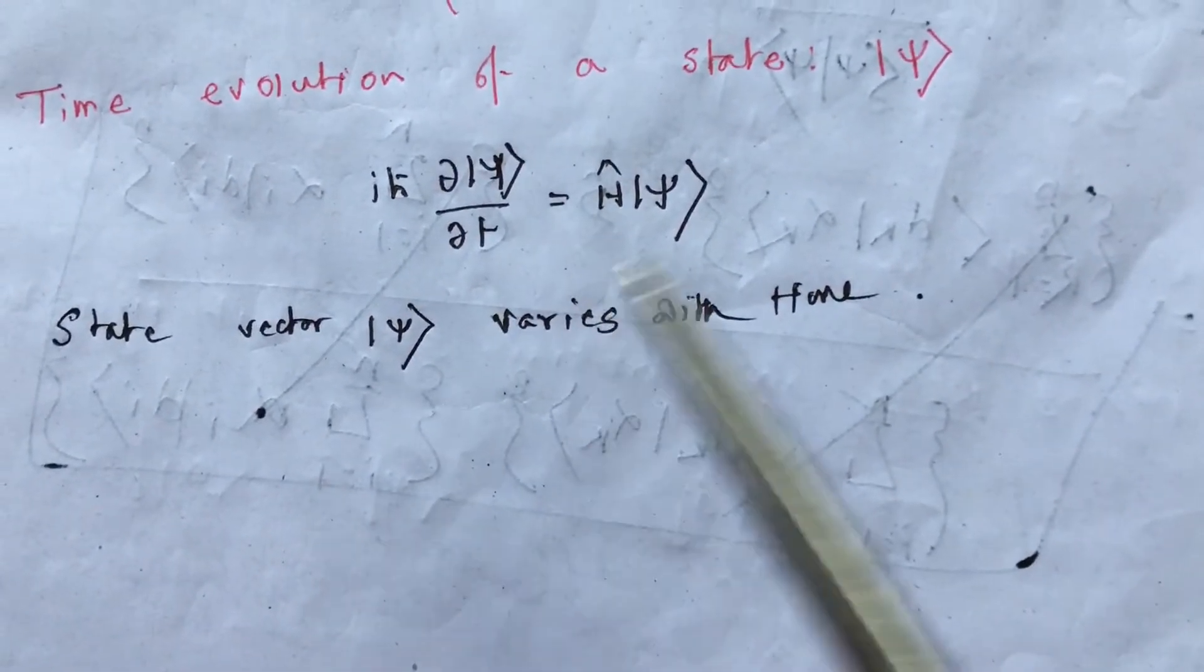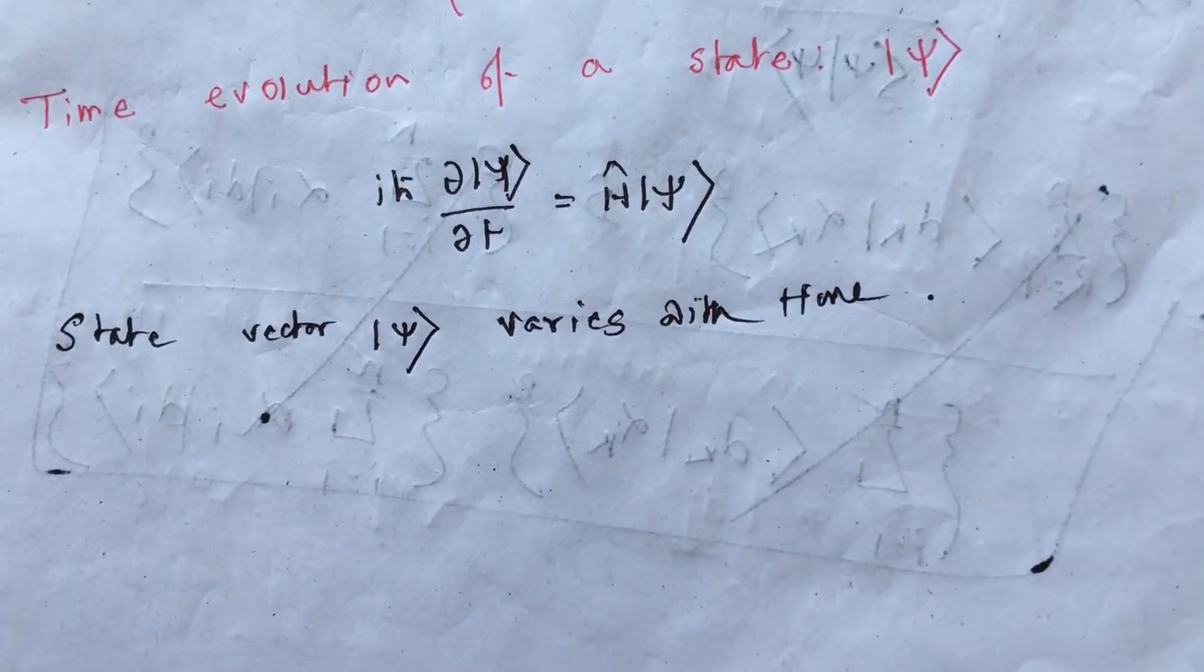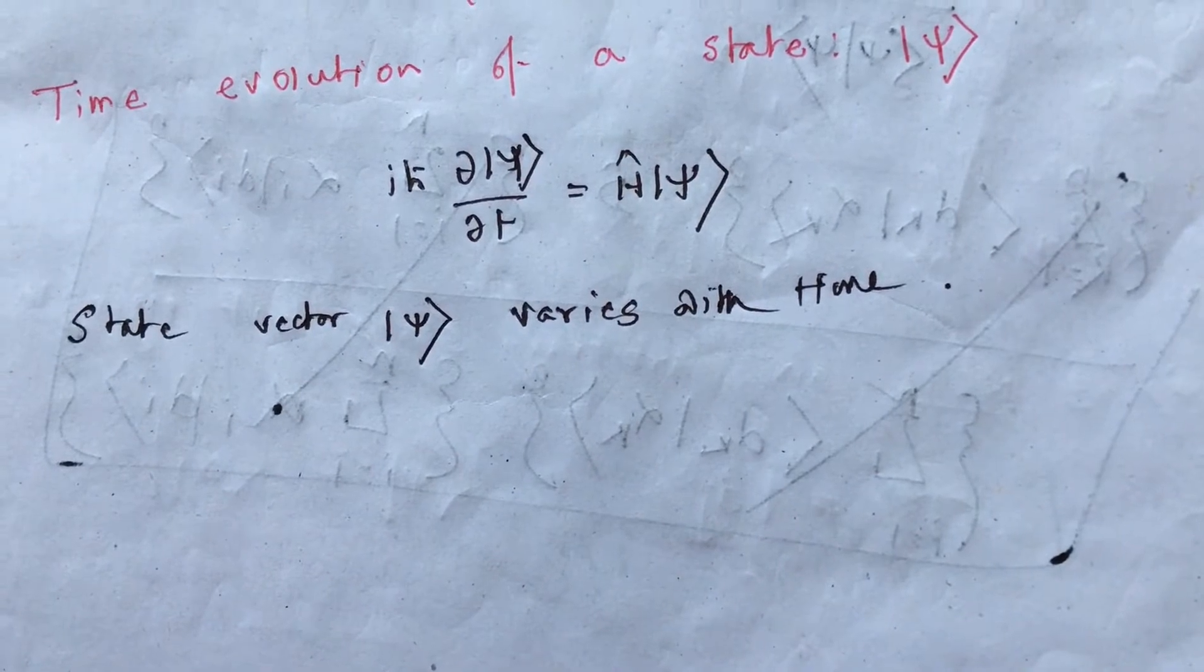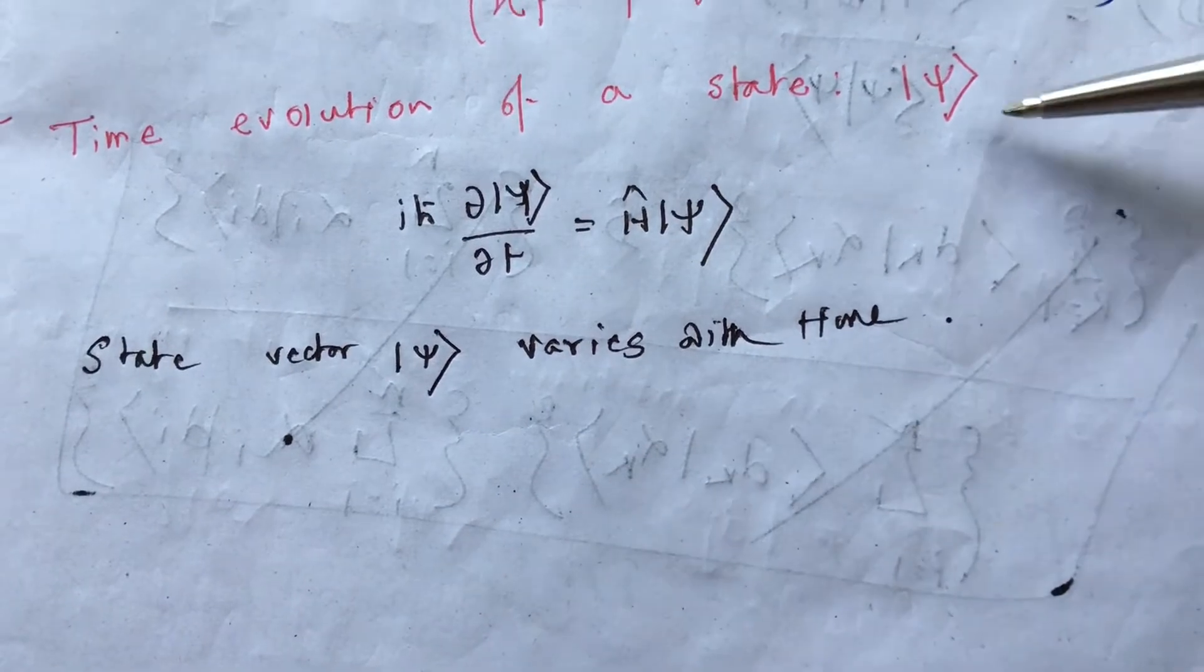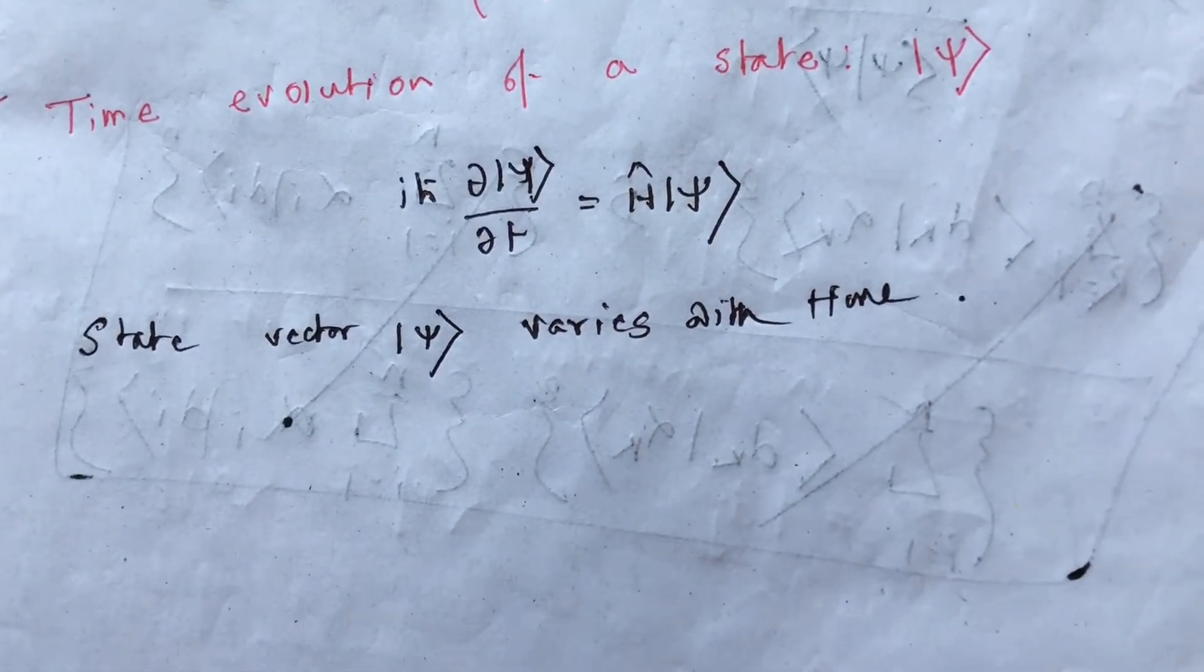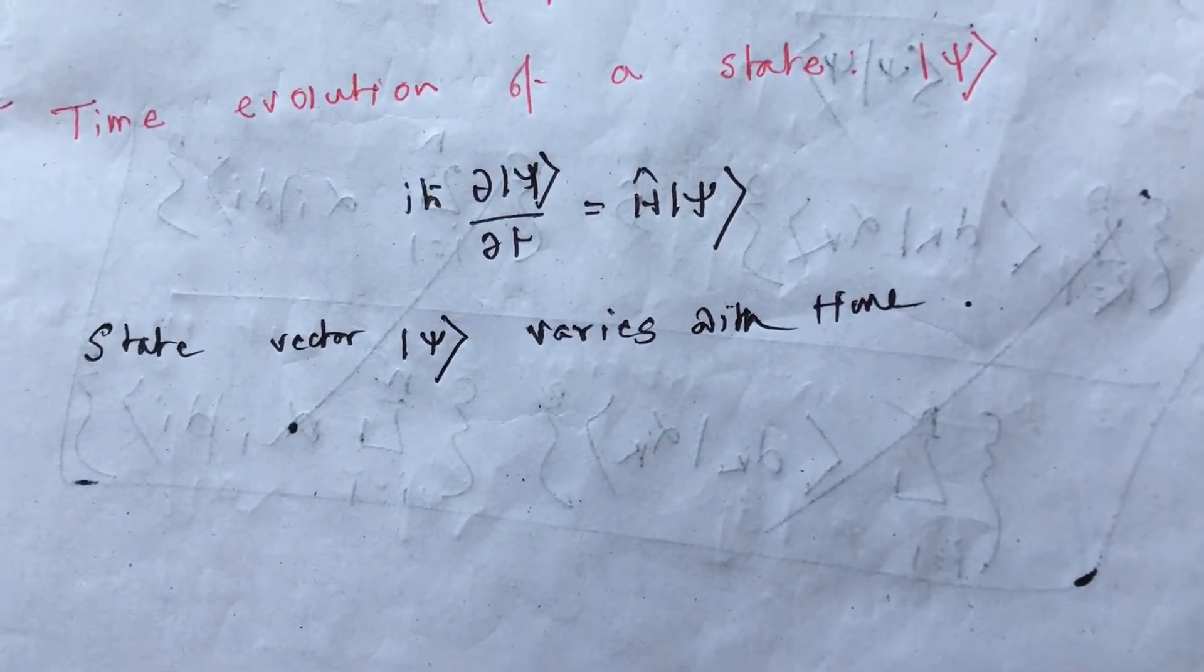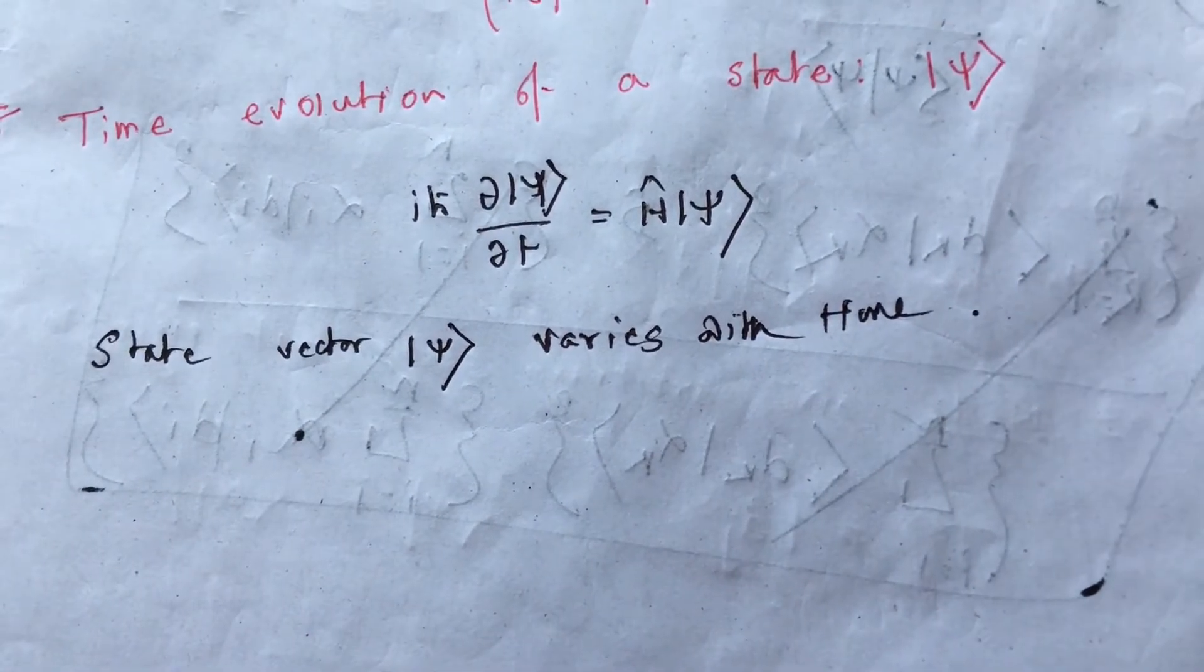Now, here comes how the state of a particle varies with time, how it evolves with time. State is something which contains all the information about a particle. So, state is extremely important.